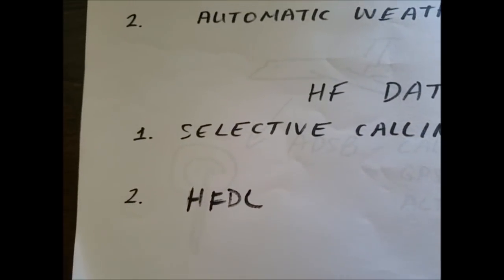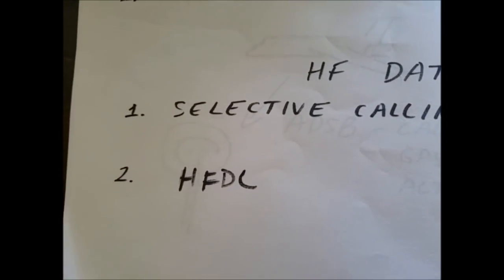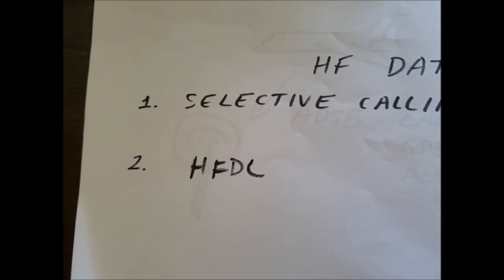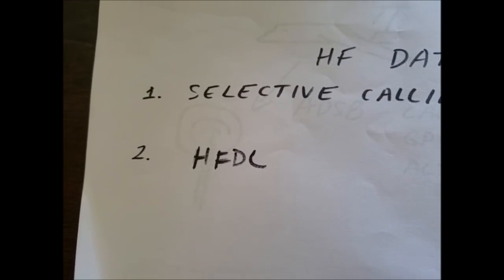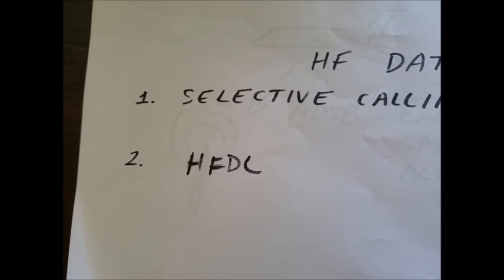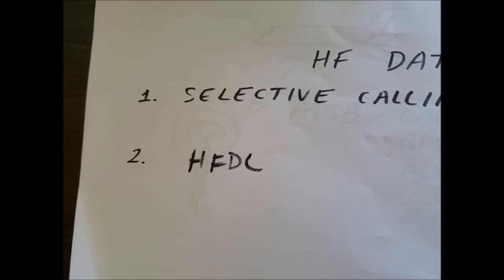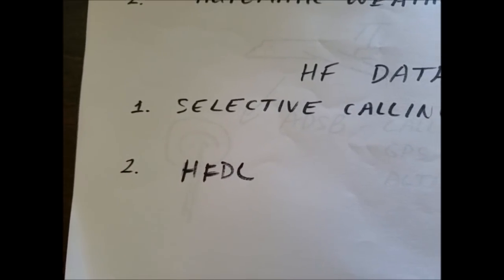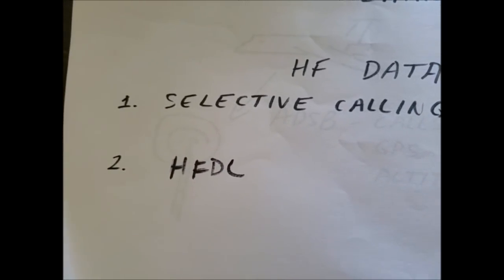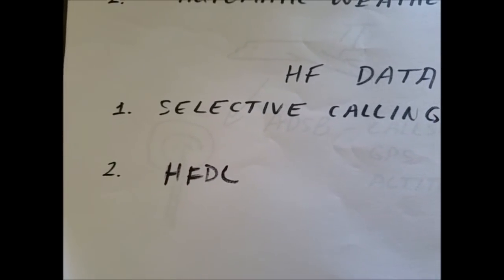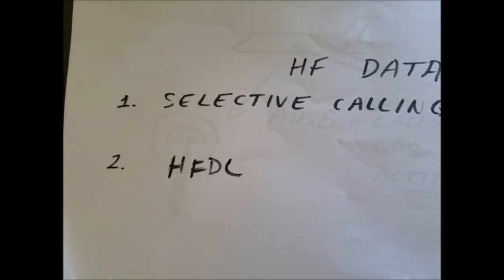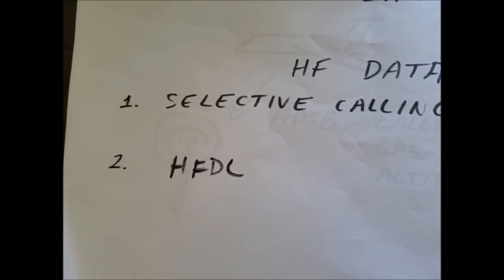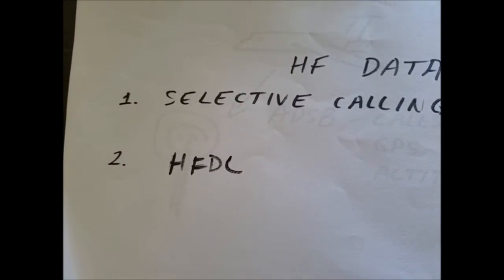Another type of selective calling is HFDL. HFDL is similarly used to page aircraft, but mostly over the polar regions because the satellite coverage over there is not as efficient as it is in other places around the planet.